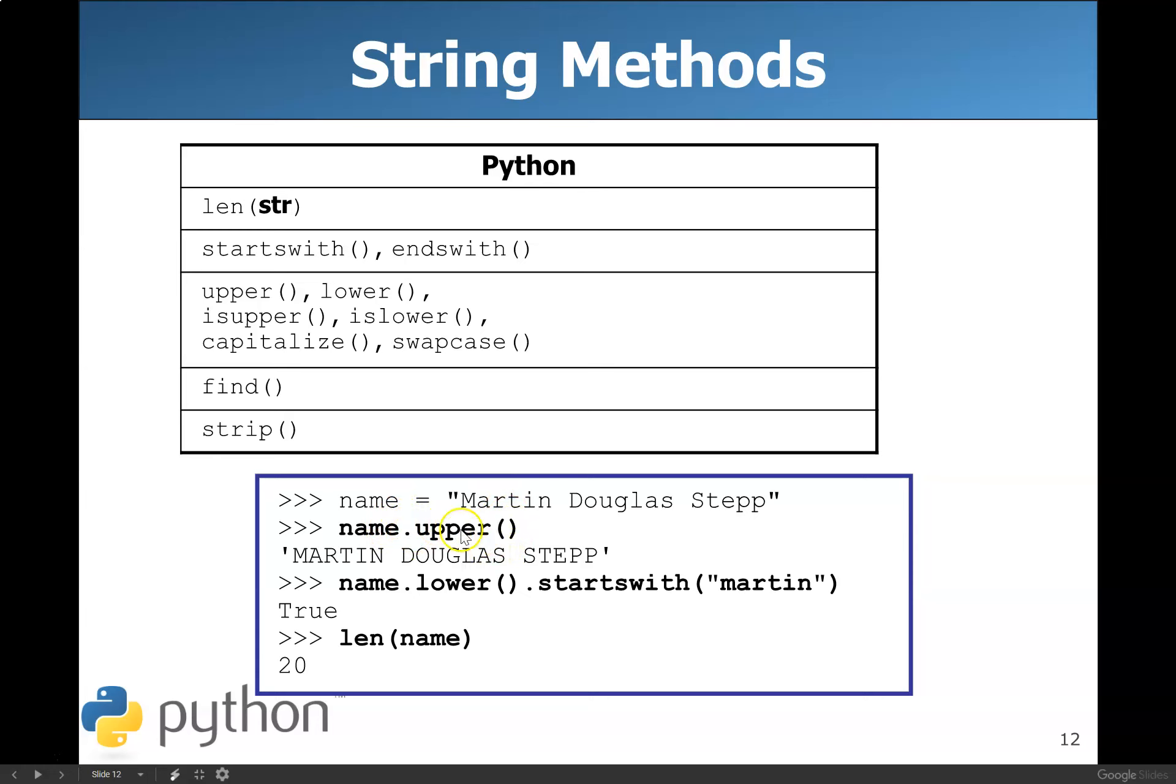It takes the name, and it says, I want to make that all uppercase. So it makes it all uppercase. If you print name.lower, dot starts with Martin. You see how you can string these together? You can string as many of these together as you want.